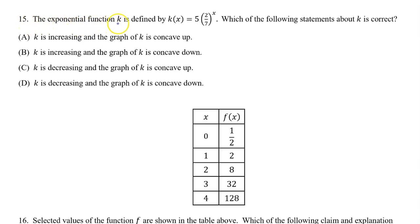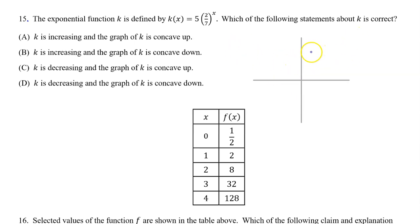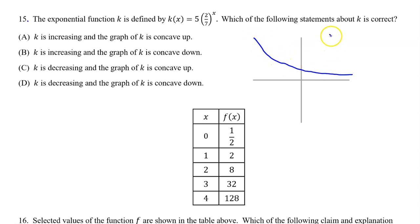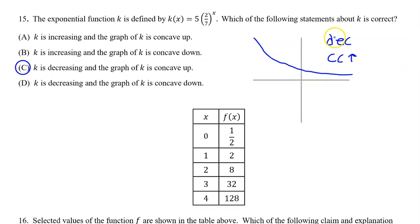Number 15. The exponential function k is defined by k(x) = 5 times (2/7) to the x power. Which of the following statements about k is correct? Let's draw a sketch. Because the a value is positive, we know the curve will be somewhere above the x-axis. Because the b value is between zero and one, this is going to be exponential decay, getting closer and closer to zero from left to right. In other words, from left to right, k(x) is decreasing, and we can see that the curve is concave up — it's the left side of a bowl shape. Decreasing and concave up means that the answer is C.